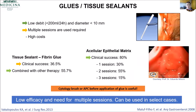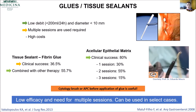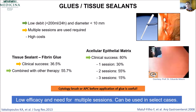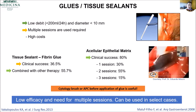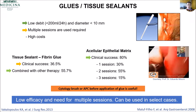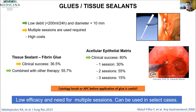Glues and tissue sealants — to be honest, I don't use them a lot. They can be used in a low-depth fistula with a diameter smaller than a few millimeters. The clinical success in the literature varies from 36 to 80%, but they usually work better when you associate another therapy.